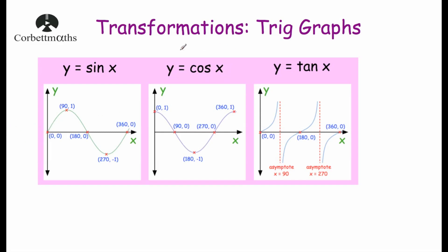The y = cos x graph starts at (0°, 1), reaches (90°, 0), (180°, -1), and then starts coming back up. And then we've got y = tan x, which has asymptotes — lines the graph never reaches. It starts at the origin, curves upwards, has an asymptote at 90°, then comes upwards again after 90°, reaches (180°, 0), and curves upwards again, carrying on like that.